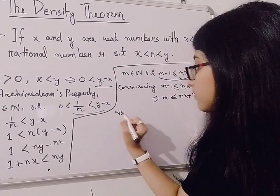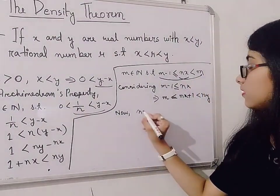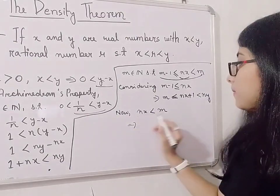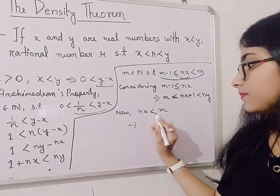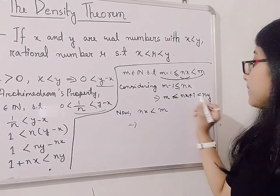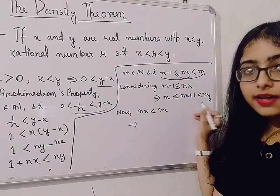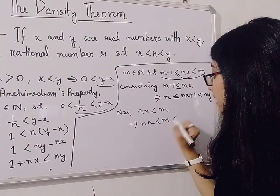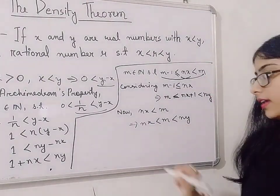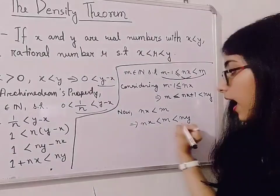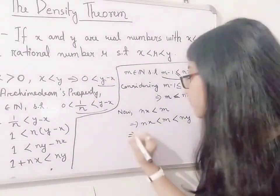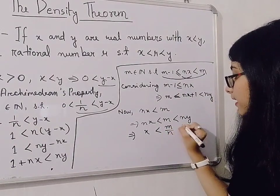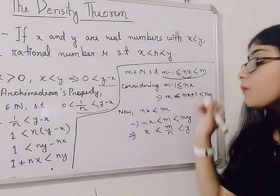Now from this one, we can directly say that m is less than ny. So nx is less than m less than ny. Now we will divide by n, so we will get x is less than m by n less than y.